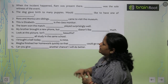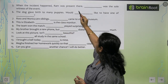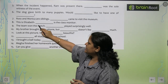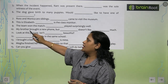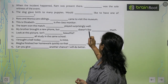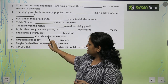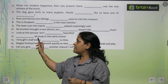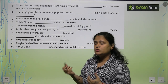Now come to the next page. The fifth one you will do yourself. 'The dog gave birth to many puppies. Would you like to have one of them?' 'This is Elizabeth. She is the class monitor.' 'My brother got a new phone but he doesn't like it much.' 'Dash — all study in the same school.' We use 'we' here because there is 'all' — we all study in the same school.